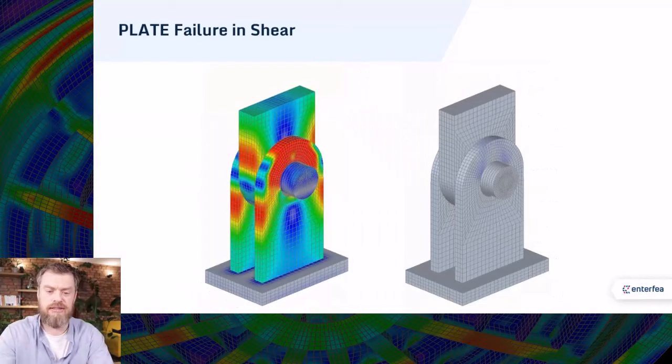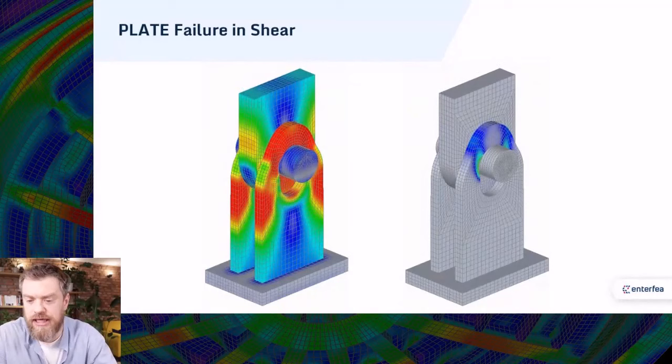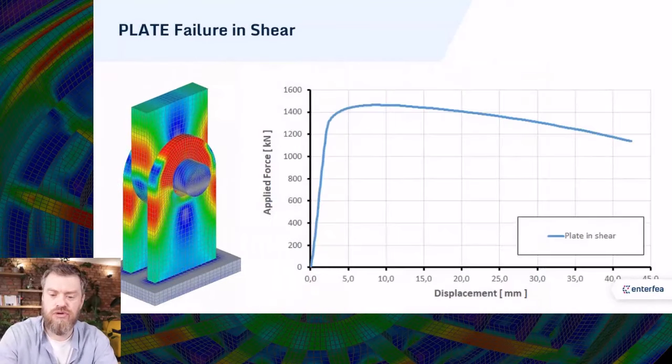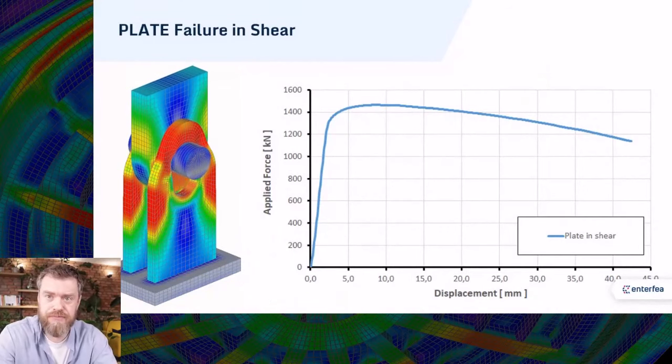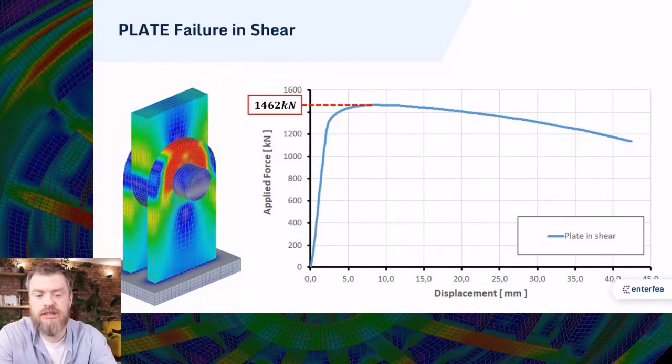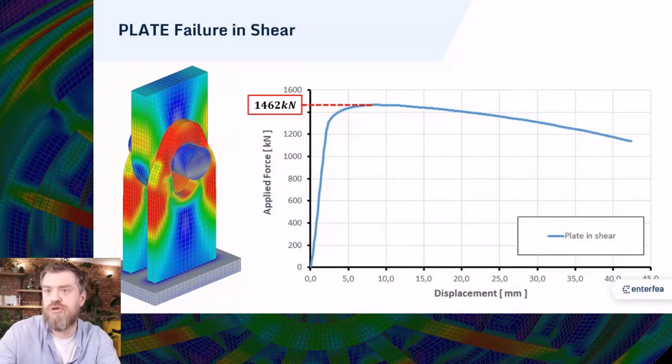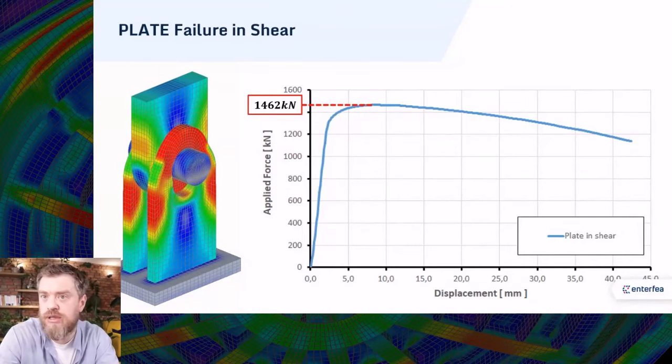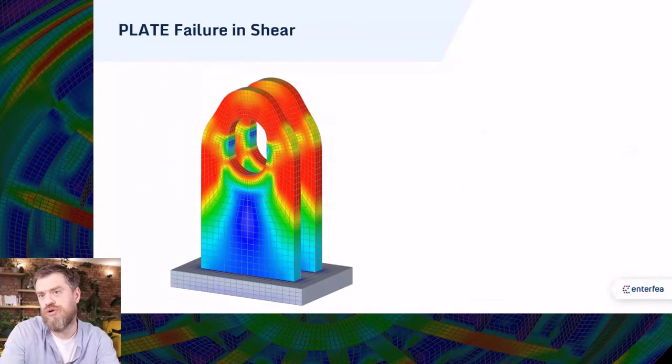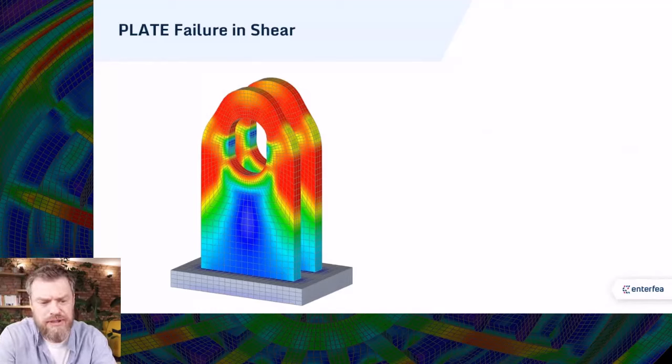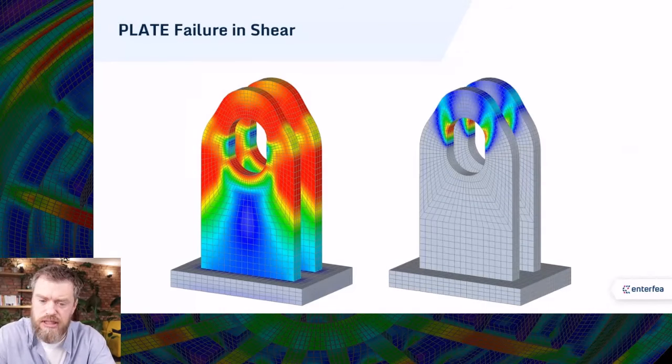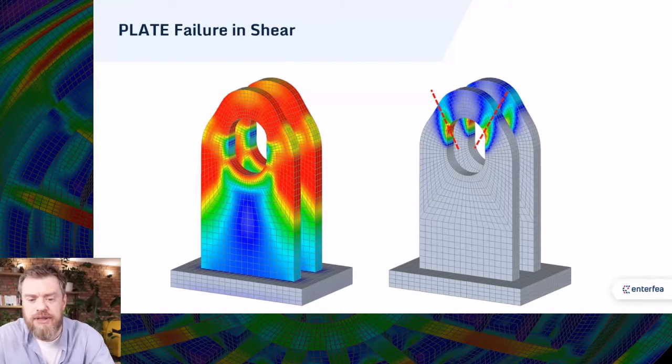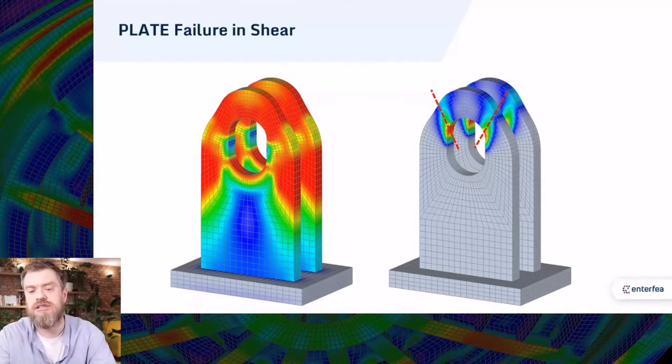When we look at the failure animation of the connection, you might be able to spot a difference in how this behaves. I will get to that in a bit more detail later. Of course, again, we will plot the equilibrium path. And you can note that the capacity of the model is around 1460 kilonewtons. Before we decide what would be the single value we want to compare, let's firstly take a look at how the plates are really failing. If I would show you only the von Mises stress distribution here, you might be actually hard-pressed to note what's the actual failure mode. However, if we plot plastic strains, it becomes way easier because you can distinctly see that each plate has two shear planes where the plastic strains align and this is where the plate fails.